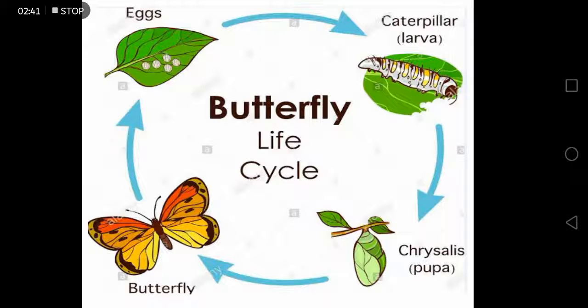The first stage is eggs. Butterfly lay their eggs on the leaf. The eggs hatch and the caterpillar or the larva come out of it.